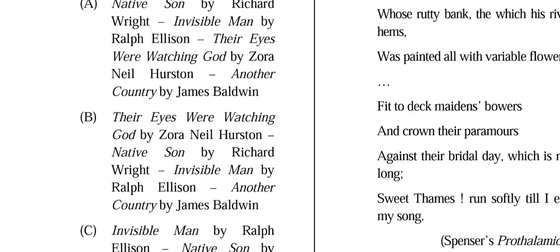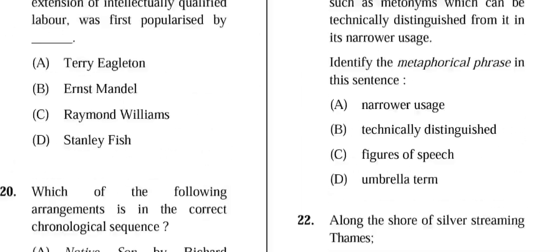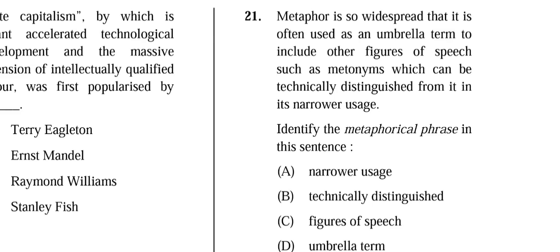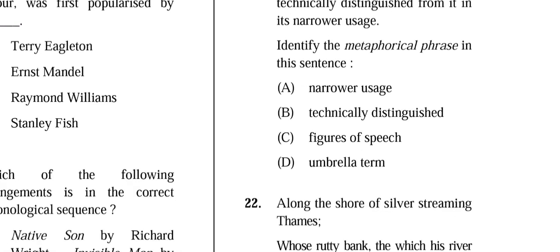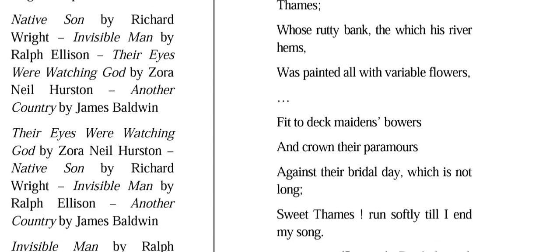Question 20: Which arrangement is in correct chronological sequence? The correct answer is (B): 'Their Eyes Were Watching God' by Zora Neale Hurston, 'Native Son' by Richard Wright, 'Invisible Man' by Ralph Ellison, 'Another Country' by James Baldwin. Question 21: Identify the metaphorical phrase in a given sentence about metaphor as umbrella term. The correct answer involves (C) and (D): 'technically distinguish' and 'figure of speech.'